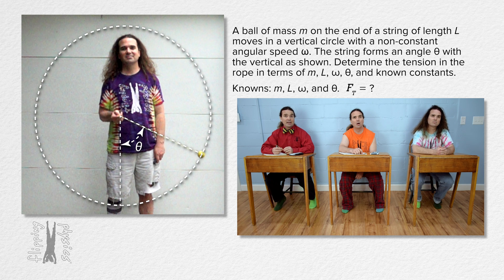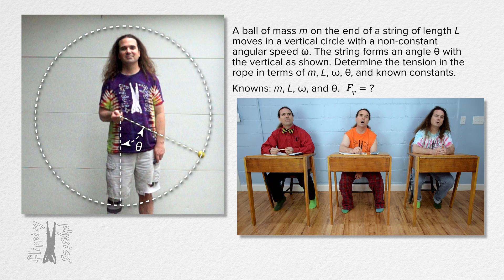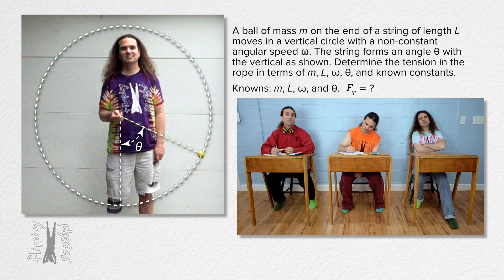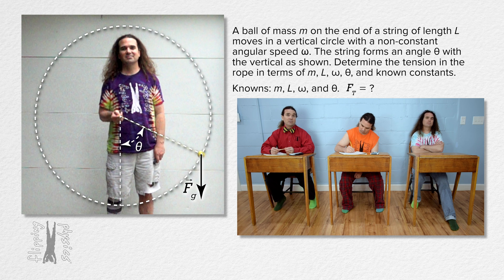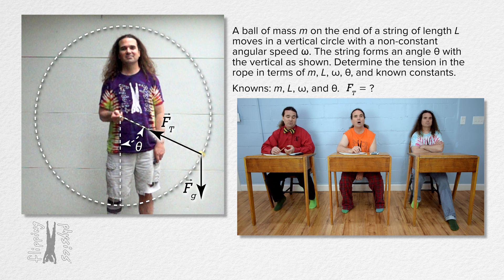We need to draw the free body diagram. Please just tell me the forces in the free body diagram. The force of gravity is straight down and the force of tension is directed in toward the center of the circle. Eventually, we are going to sum the forces in the in-direction, or the direction along the radius of the circle, which is where the string is.